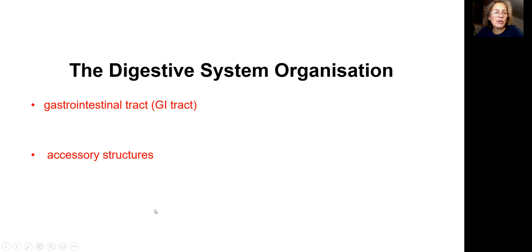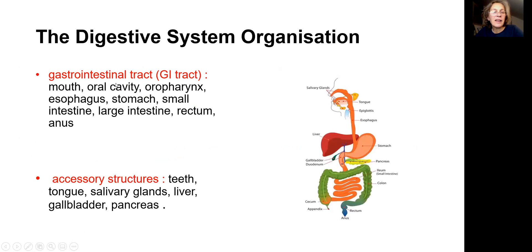The digestive system organs: the gastrointestinal tract itself and accessory structures. The tract is mouth, oral cavity, oropharynx, esophagus, stomach, small intestine, large intestine, rectum, and anus.